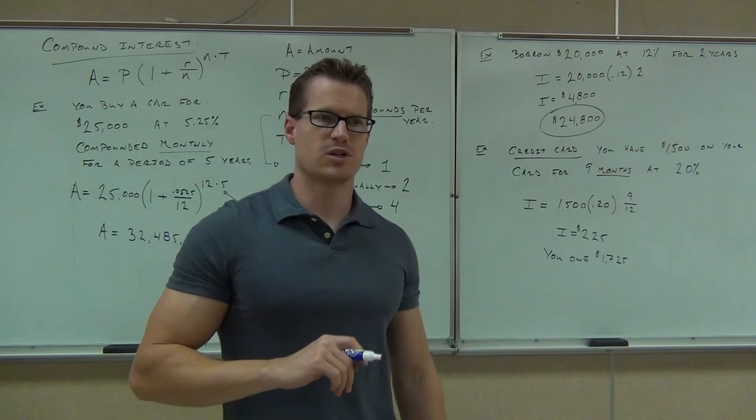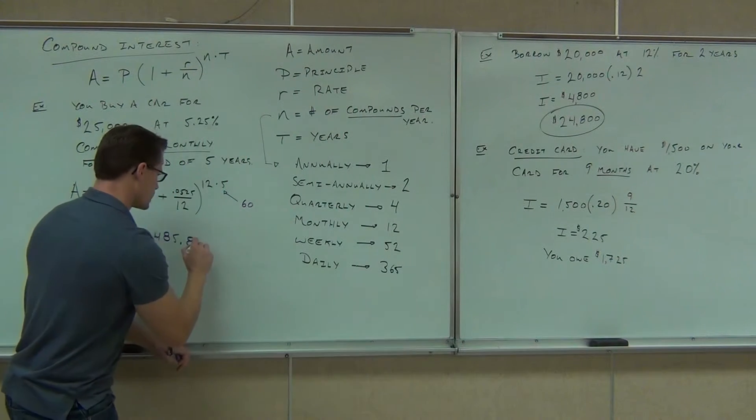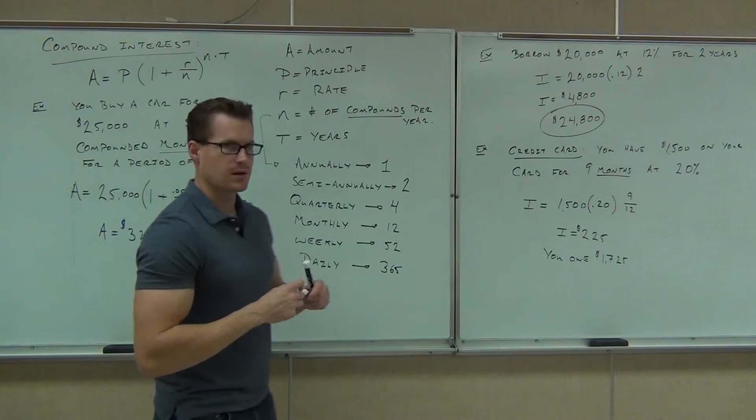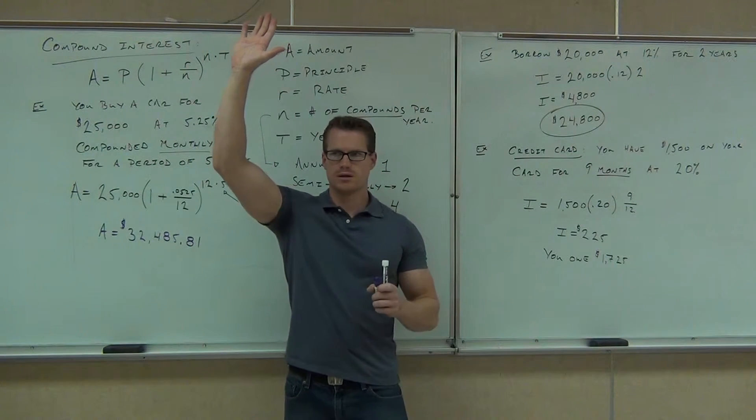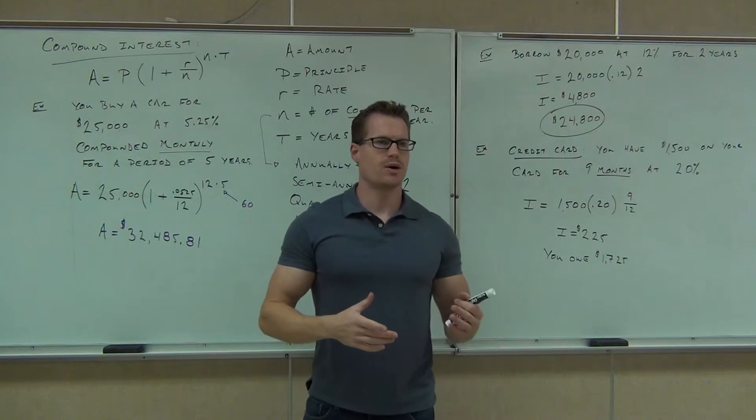Okay. You have to round appropriately. So if you have point eight, zero, six, that means you're going to have 81 cents. $32,485.81. How many people are able to get that if you had a calculator? Good. You're now able to calculate compound interest in one step.